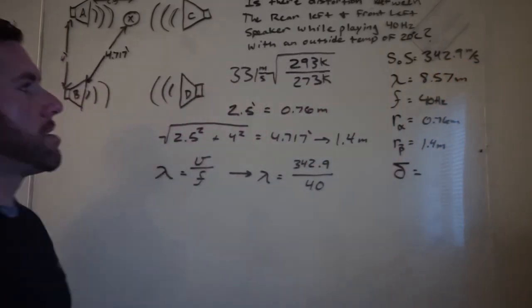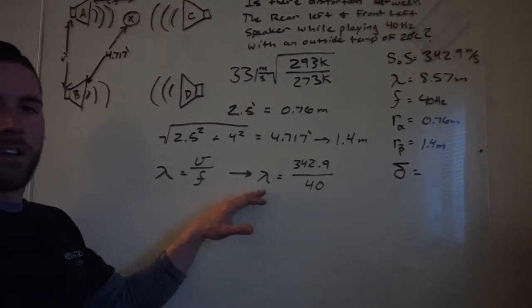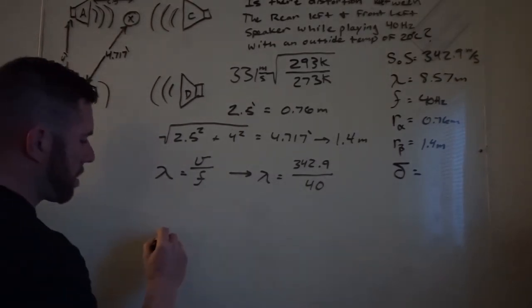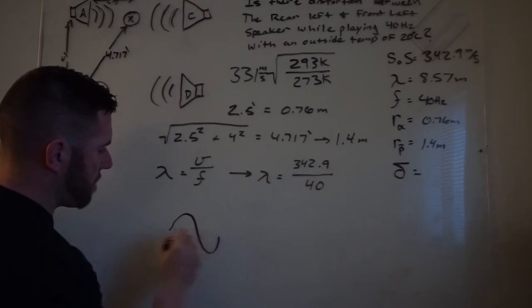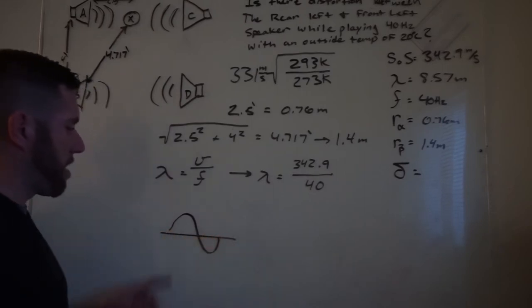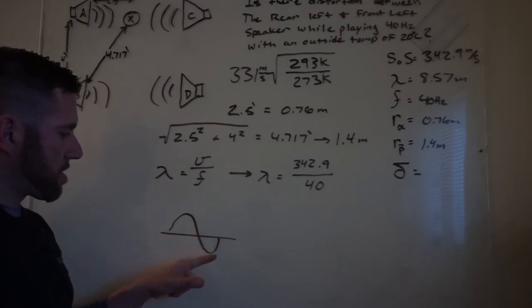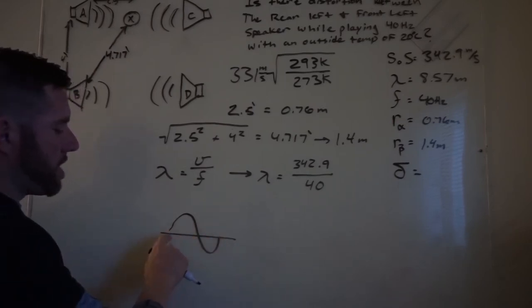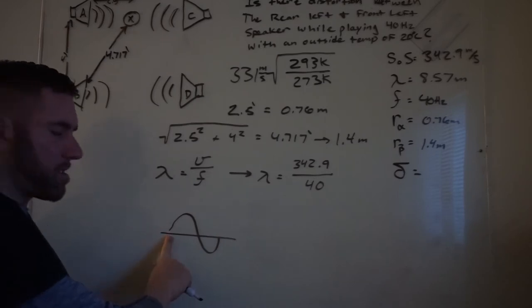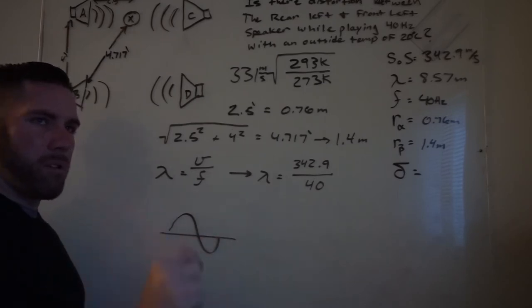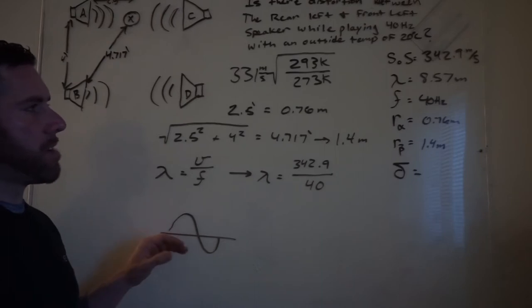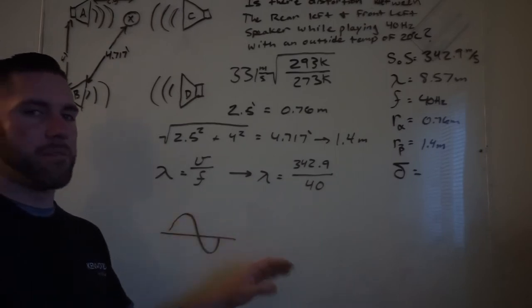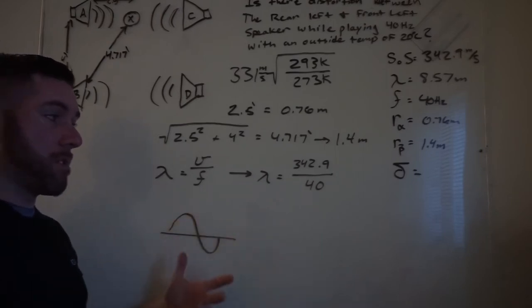Now, what is that value? 8.57 means that every time this thing makes one wave on the graph, which means speakers coming out, speakers getting sucked in, from the time that it initially starts to move the cone to the time that it stops in one pulse, the sound has traveled 8.57 meters. That's how you know what the wavelength is.